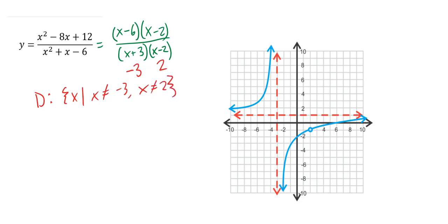Graphically, these excluded values can show up in one of two ways. Either they can form a vertical asymptote, which this one does at negative 3, or they can make a hole in the graph, which this one does at 2. So this video is about how to find vertical asymptotes and holes, and how to know when it shows up as a vertical asymptote or a hole.